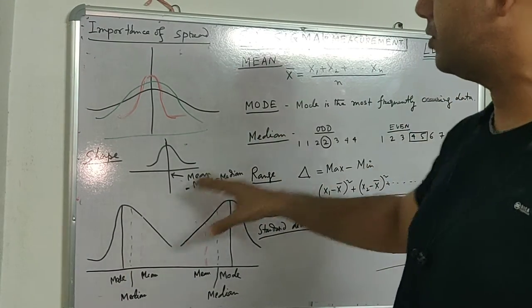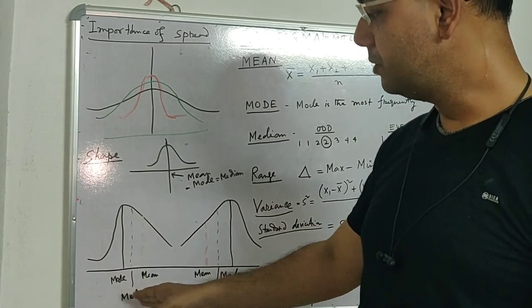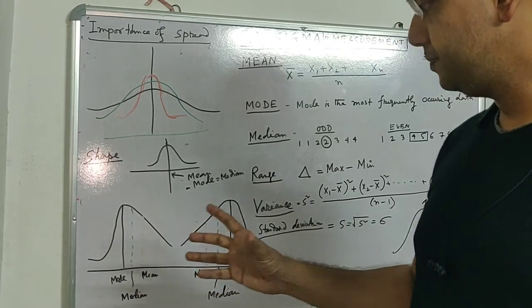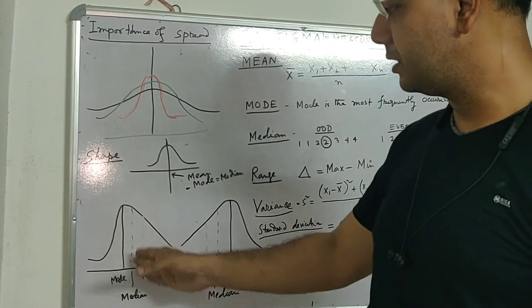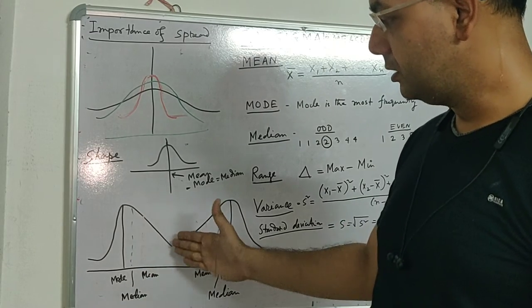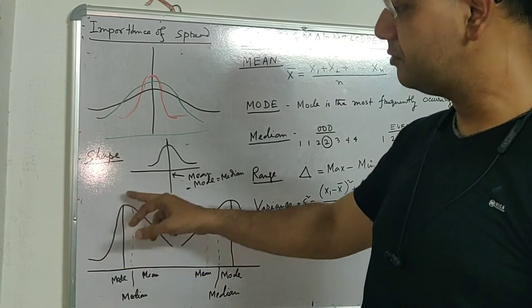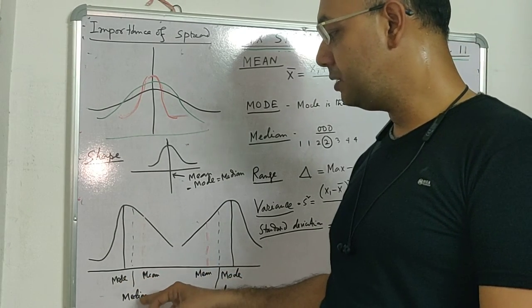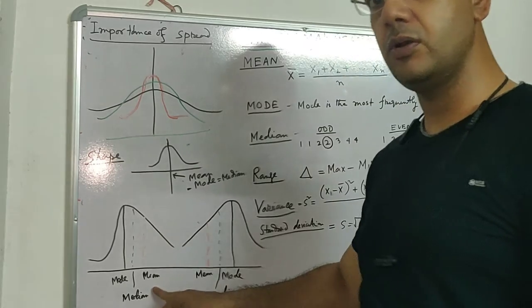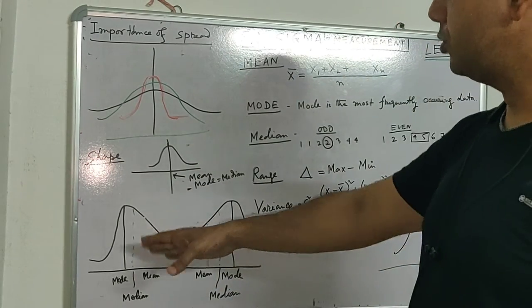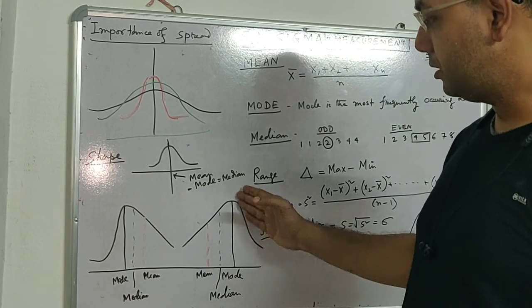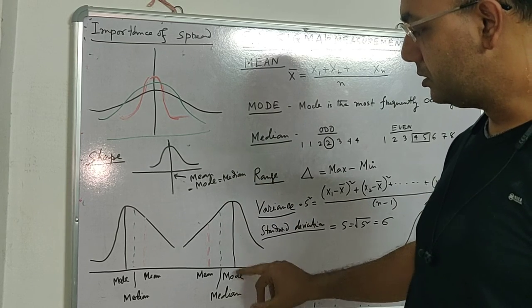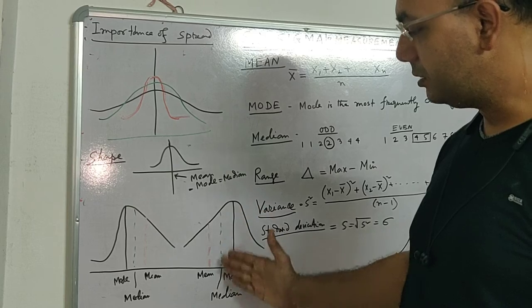Mode is maximum frequency of occurrence of data. Median is next, similar kind of data is here, and mean is here. In this kind of shape, mode is more than median, and median is more than mean. If it's opposite, then maximum data points are around this—mode point—then median, then mean.